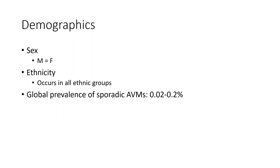Demographic sex: equal male and female. Global prevalence of sporadic AVM is around 0.02 to 0.2%.